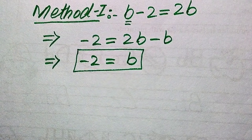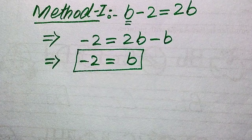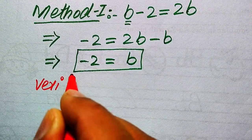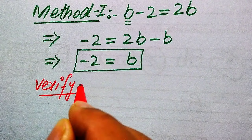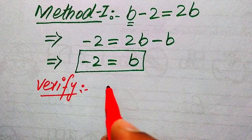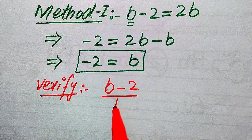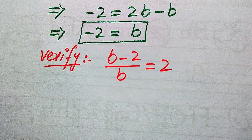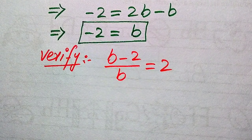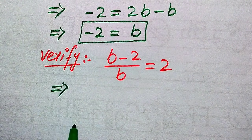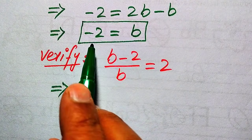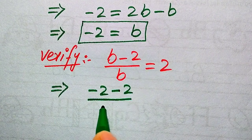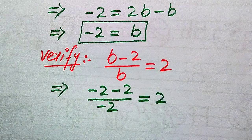In the next step we need to verify whether this value of b is the solution or an extraneous root. For verification we copy down the given question statement: b minus 2 divided by b equals 2. On the left hand side we substitute b equals minus 2, so it becomes minus 2 minus 2 divided by minus 2, equals 2.